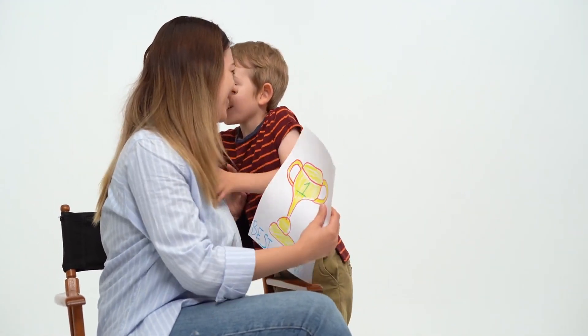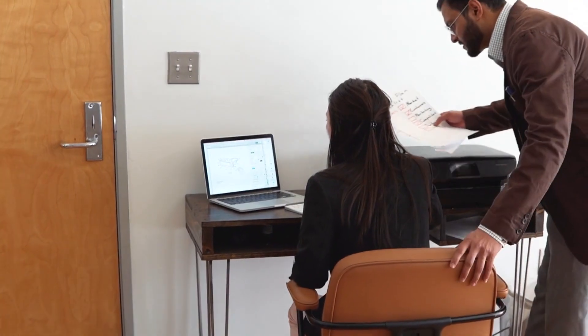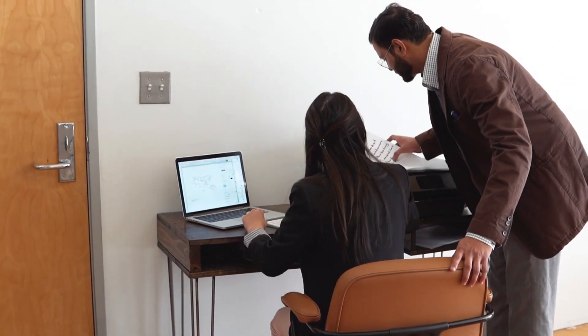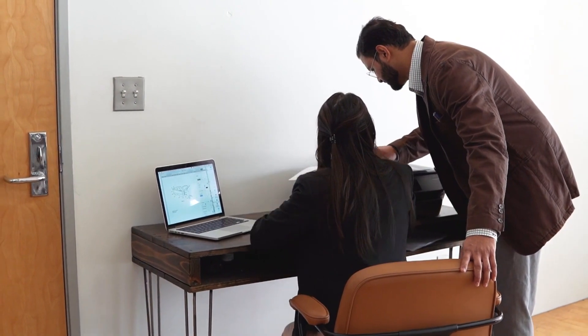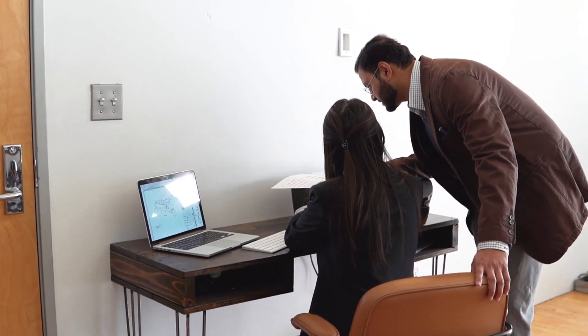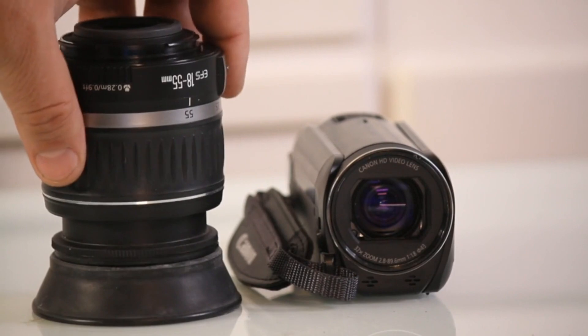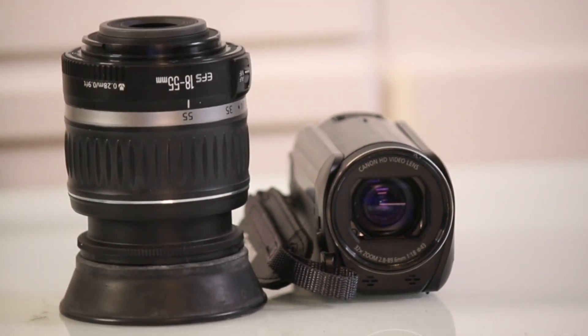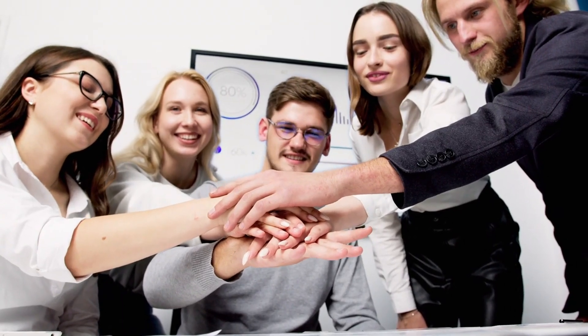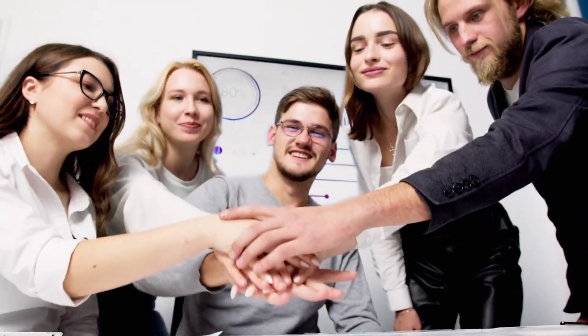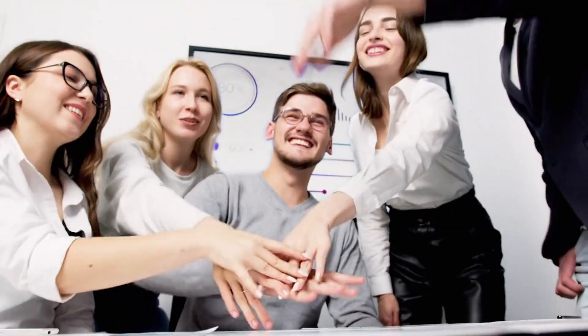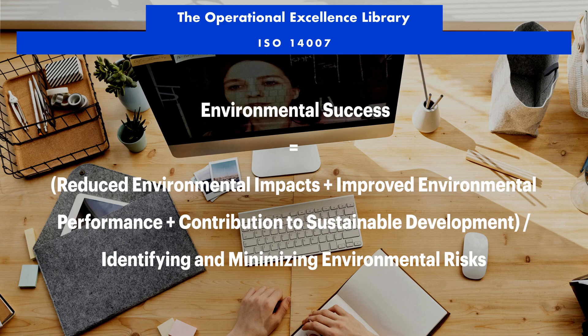4. Integrate Environmental Considerations into Decision-Making Processes: The standard encourages organizations to integrate environmental considerations into their decision-making processes, ensuring that environmental risks and opportunities are taken into account when making strategic business decisions. 5. Develop a Culture of Sustainability: By implementing ISO 14007, organizations can foster a culture of sustainability that encourages employees to identify and implement environmental improvements, reducing waste and emissions, and improving overall environmental performance.